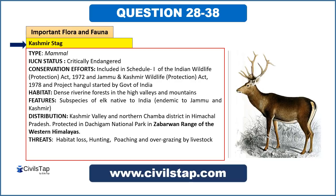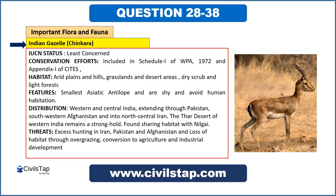The Indian gazelle or chinkara is a least concerned species, but is also included in Schedule 1 of WPA and CITES Appendix 1. Its habitat is mainly arid lands and grassland regions, primarily the Thar desert in India. It is the smallest Asiatic antelope and generally avoids human habitation — it is a shy animal that runs and hides when it encounters humans.